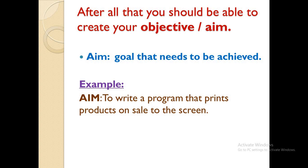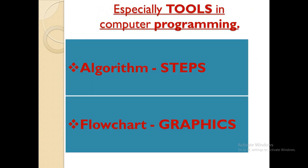After all that, you should be able to know the aim and objective. When we talk about the aim, we're talking about the goals that need to be achieved. For example, the aim is to write a program that prints products on sale on the screen. Make sure you write the objective clearly.